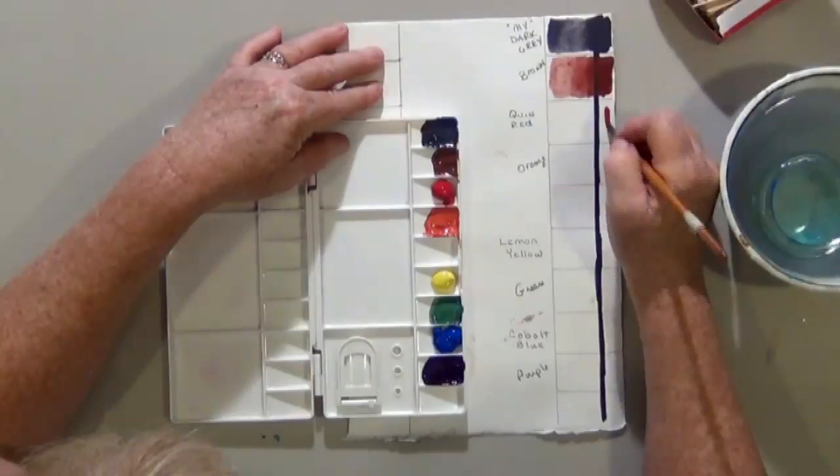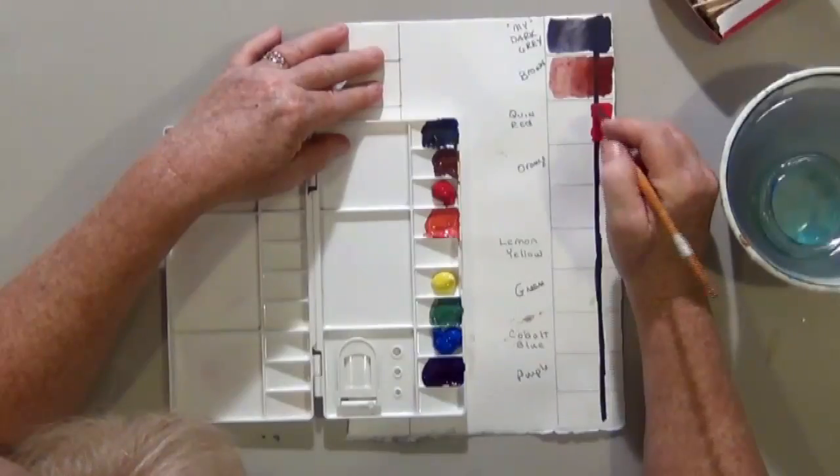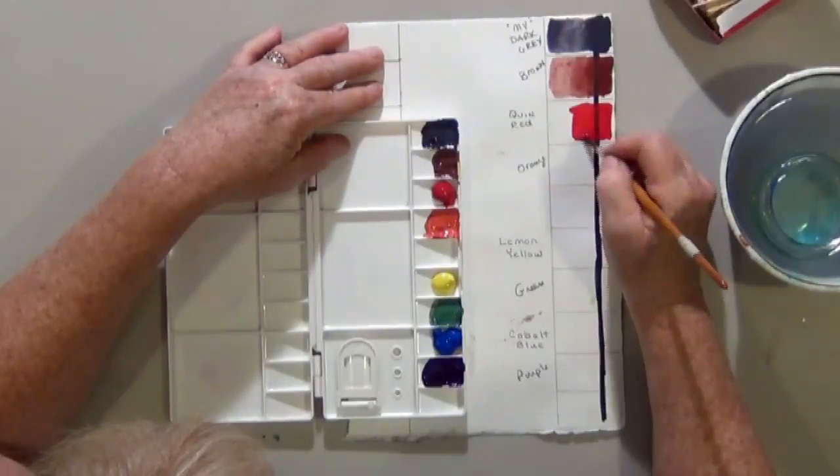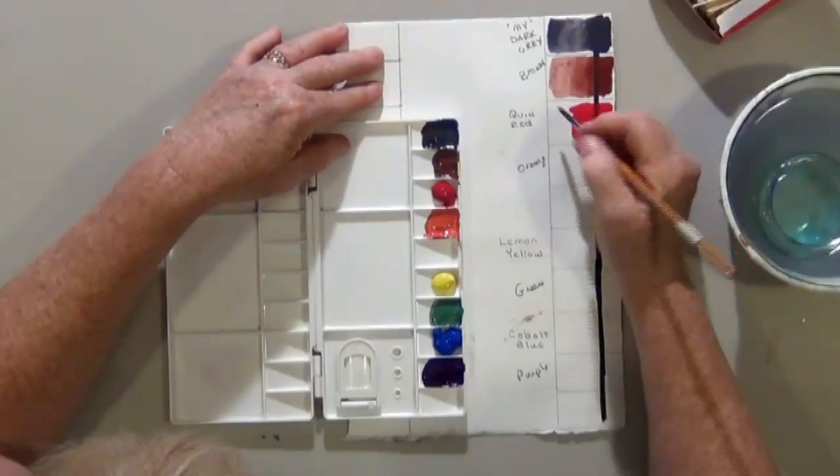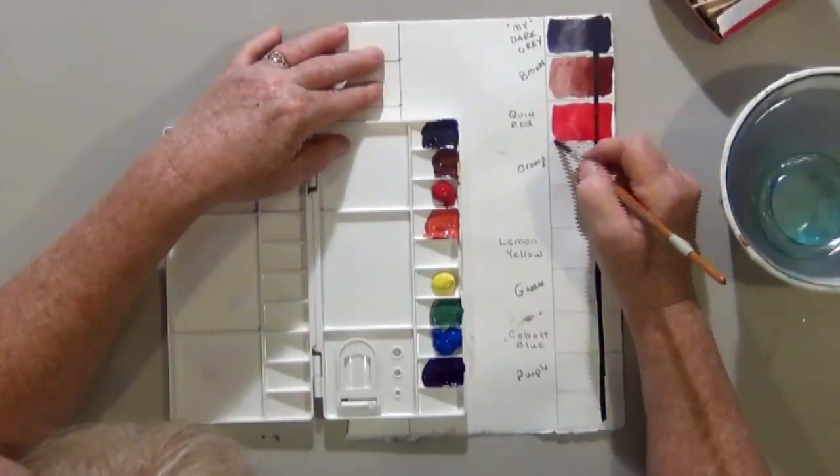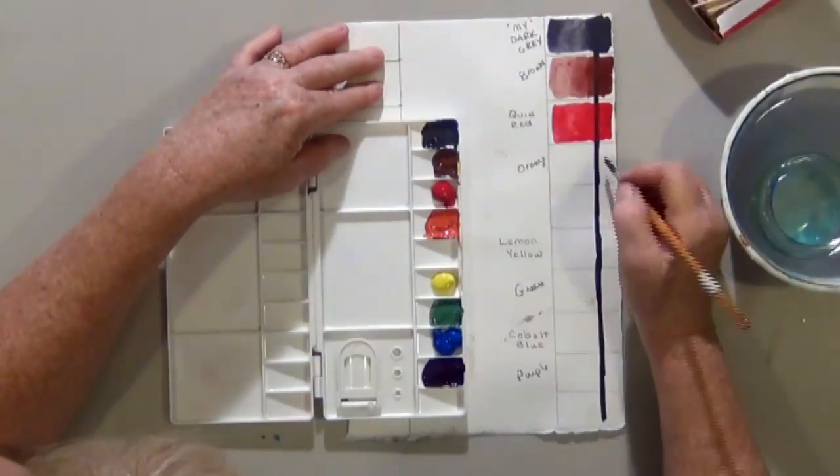Quinacridone red goes by a lot of different names. I think it's sold under two or three hundred different names. So you may very well have some in your palette under a different name and not even know it. Here's our orange.